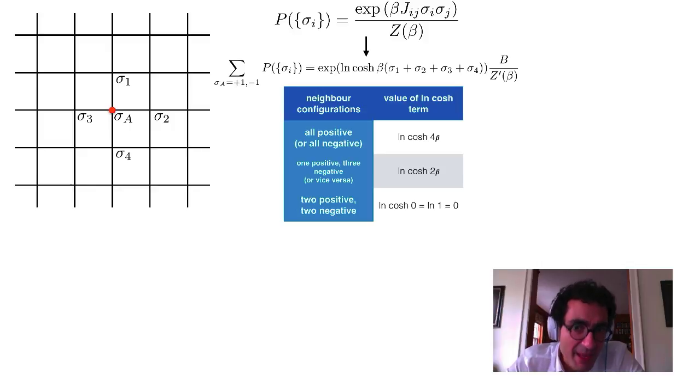If the sigma 1, 2, 3, and 4 are all the same sign, so either all positive or all negative, then you get log cosh 4 beta. If one's positive and three are negative, or vice versa, so if three of them have the same sign and the other has a different sign, then you get a term that's log cosh 2 beta. And finally, if half of them are one sign and the other half are the other sign, in that case, the term is 0 because cosh of 0 is 1 and log of 1 is 0. So even though log cosh seems like it's going to be this super curvy function, because sigmas can only take on one of two discrete values, all we need to do is keep track of a table.